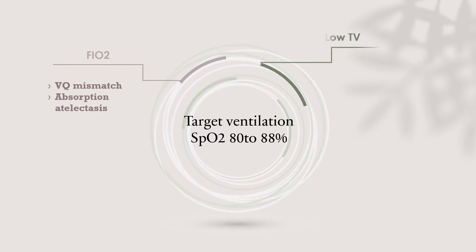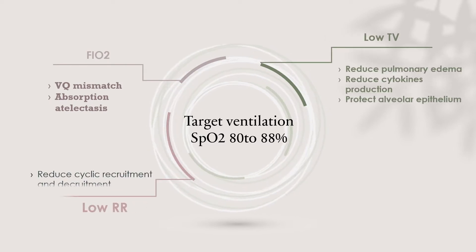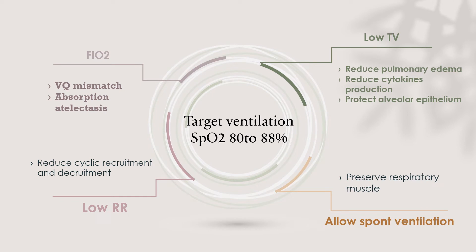When we use VV ECMO, we target ventilation by using low FiO2 to avoid VQ mismatch and absorption atelectasis. For respiratory rate, we use a lower rate to reduce cyclic recruitment and de-recruitment, allowing spontaneous ventilation to avoid respiratory muscle weakness and lower tidal volume. This helps reduce pulmonary edema, reduces cytokine production, and protects the alveolar epithelium. Lastly, we should maintain SpO2 at 80 to 88%.